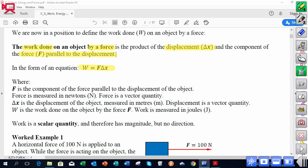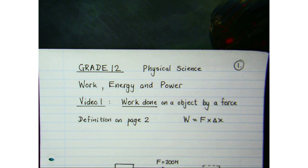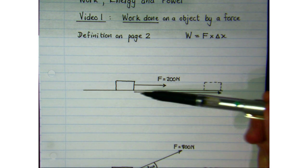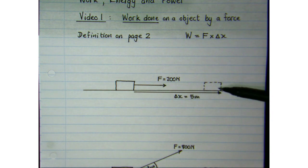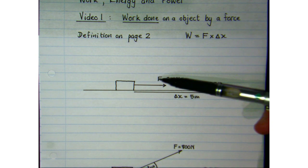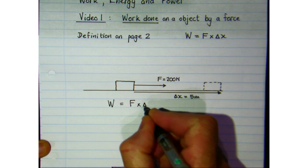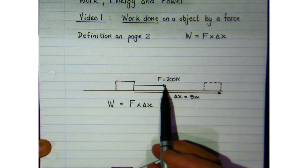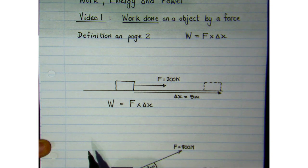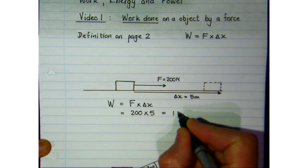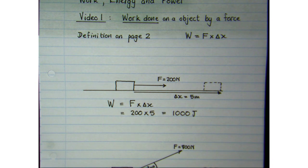Here's the equation for work done. We can't just put any force in there — it has to be the force parallel to the displacement. In this simple example, we have a 200 newton force acting on an object over a distance of 5 meters. Work equals force multiplied by displacement: 200 newtons times 5 meters gives us 1000 joules of work done by that force.